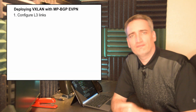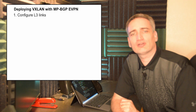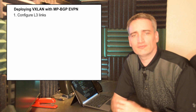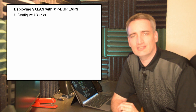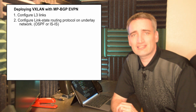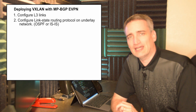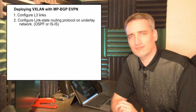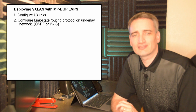So how do we configure VXLAN on our network? I'm going to go over this in more detail in my next video, but from a high level these are the steps. First, you're going to configure the layer 3 network links between your VXLAN switches in the environment. Next, you're going to configure a link state routing protocol to handle the traffic on that underlay network — something like OSPF or intermediate system to intermediate system.